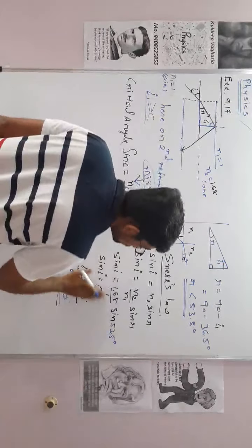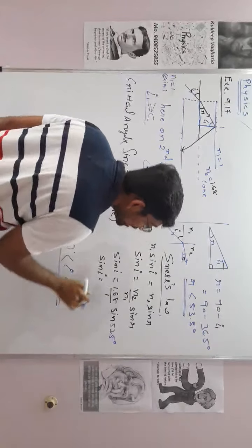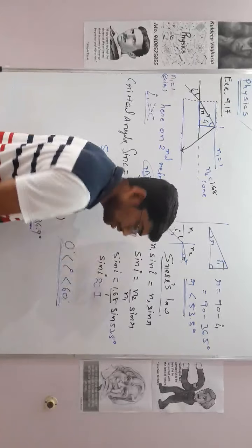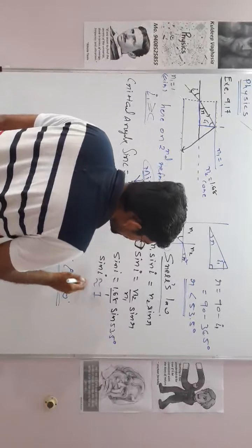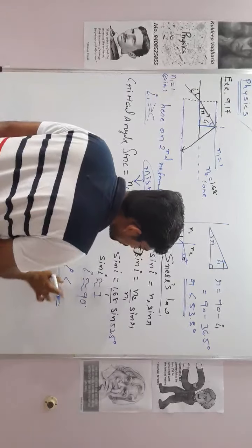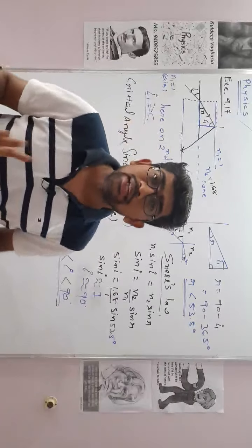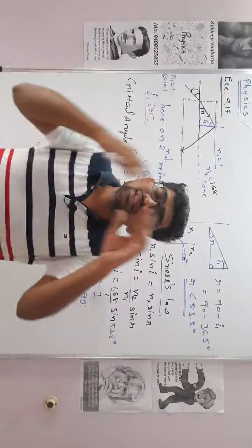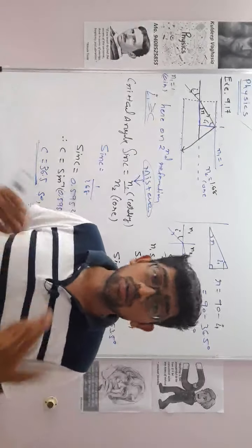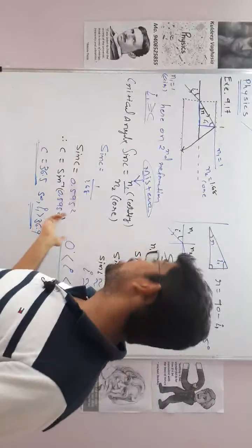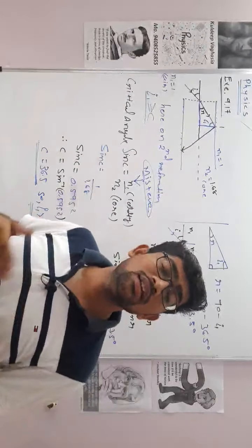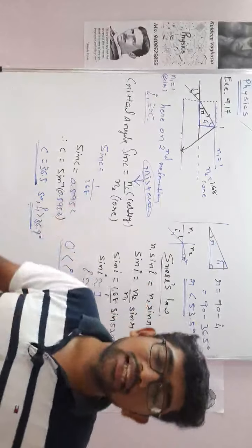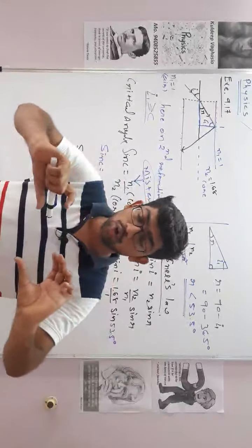Applying Snell's law again with R approximately 53.5 degrees: sin I = 1.68 × sin 53.5. This gives a value near about 1. Since the maximum value of sine is 1, a sine value near 1 means the angle I is near about 90 degrees. So without cladding, the outer incident angle required is approximately 90 degrees. An incident angle of 90 degrees means the ray travels along the surface — practically impossible.